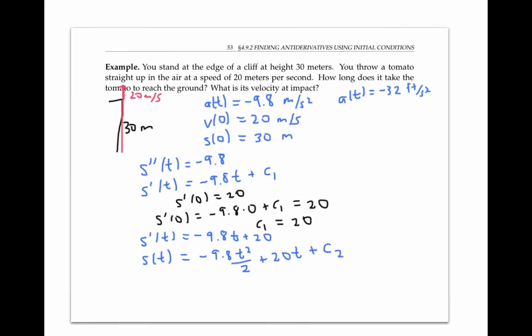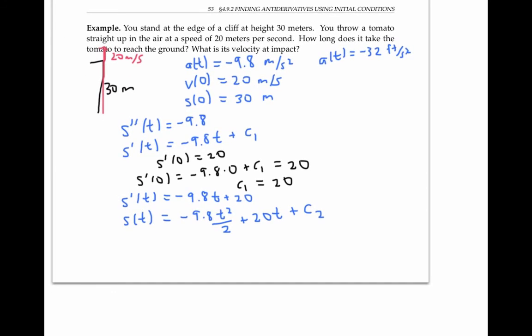Using my second initial condition, s of zero equals 30, I can plug in zero for t and get an expression that equals 30. Since all the terms drop out besides the C two, that tells me that C two is 30. And so I can find my equation for position by substituting 30 for C two.